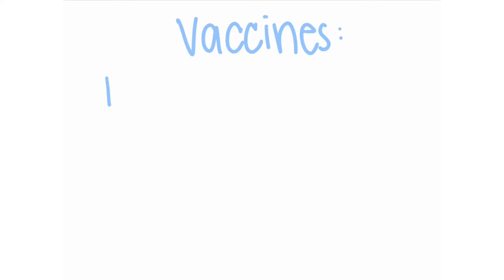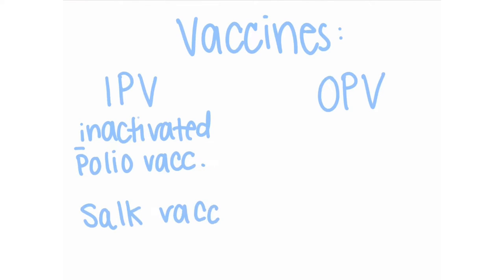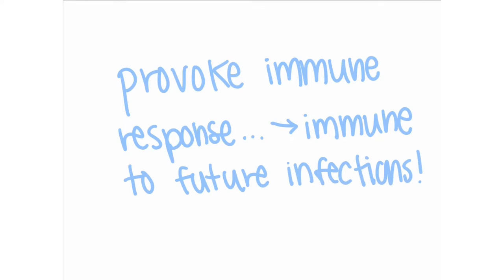There are two types of polio vaccines: the IPV and the OPV. The IPV is the inactivated polio vaccine, also known as the Salk vaccine. The OPV is the oral vaccine, or the Sabin vaccine, named after its founder. The vaccines provoke an immune response so that the recipient becomes immune to future infections of polio virus.